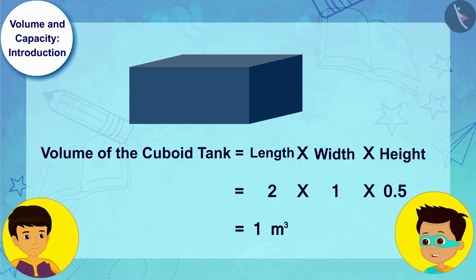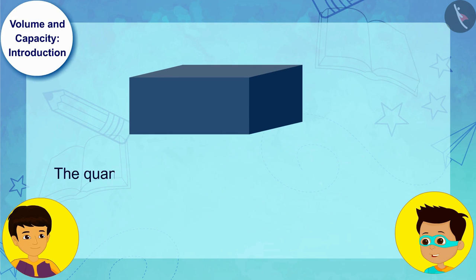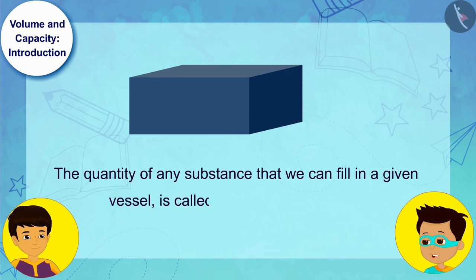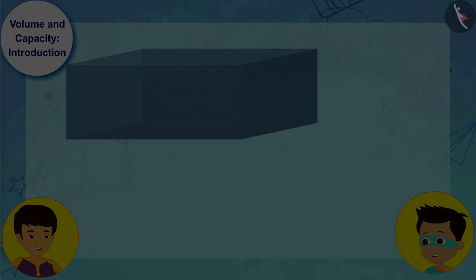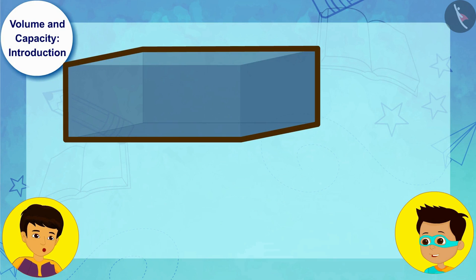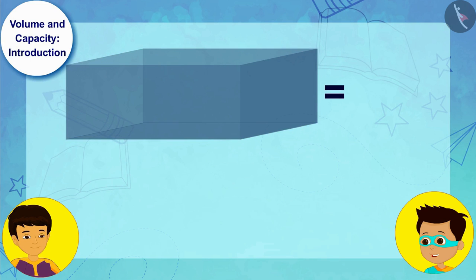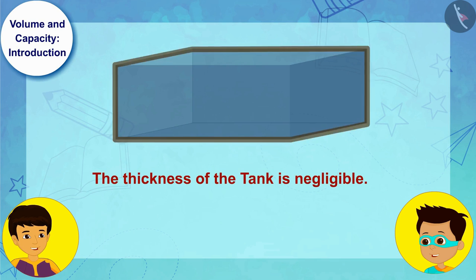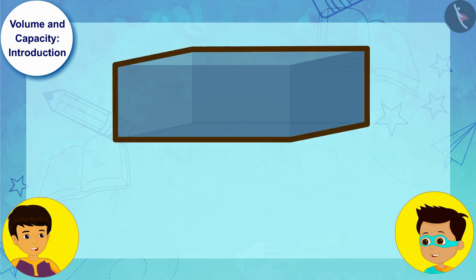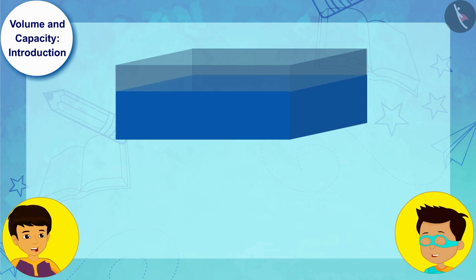And do you know that the quantity of any substance that we can fill in a given vessel is called the vessel's capacity? But Thomas, the space occupied by the tank is the volume of the tank. And because the thickness of the tank is negligible, the space occupied by the water inside the tank, or the capacity of the tank, is equal to the space occupied by the tank, or the volume of the tank.